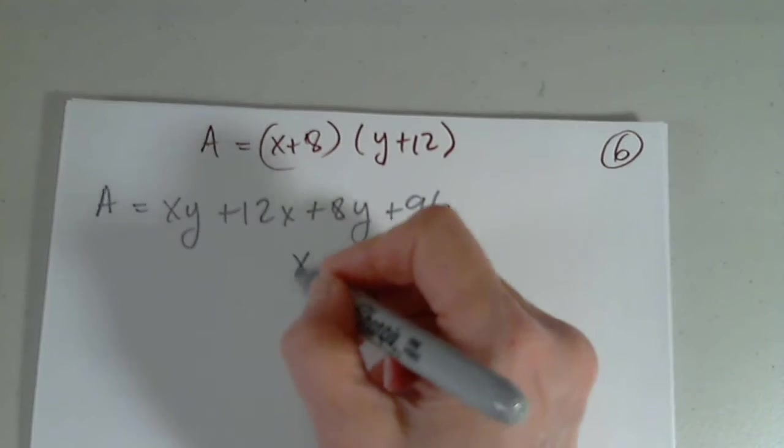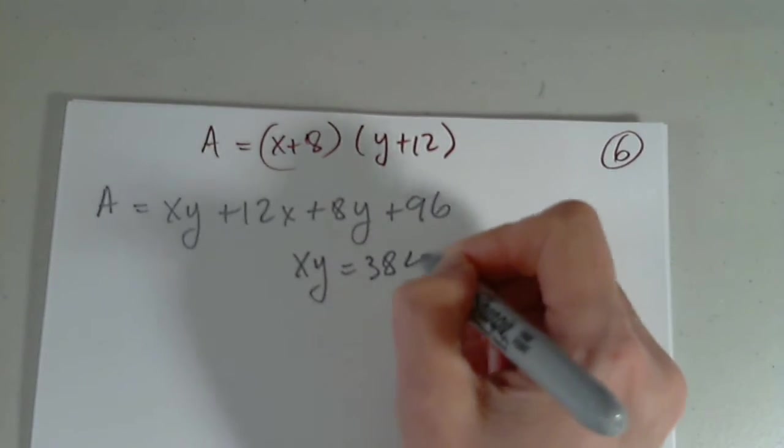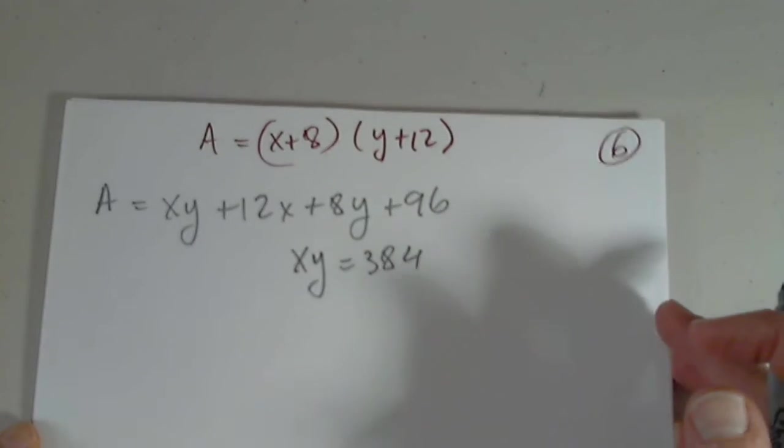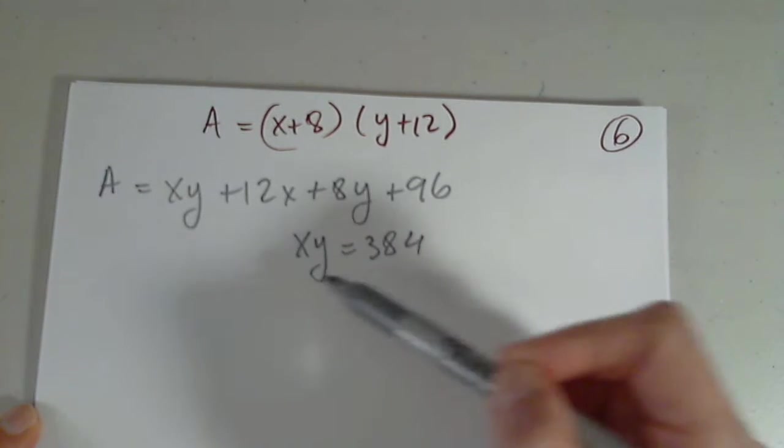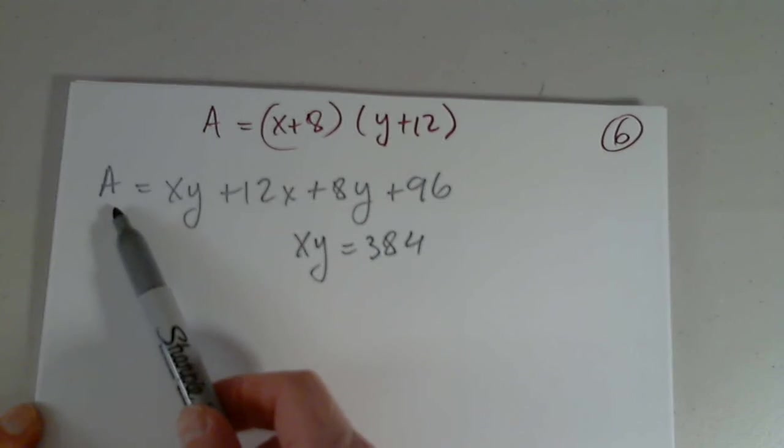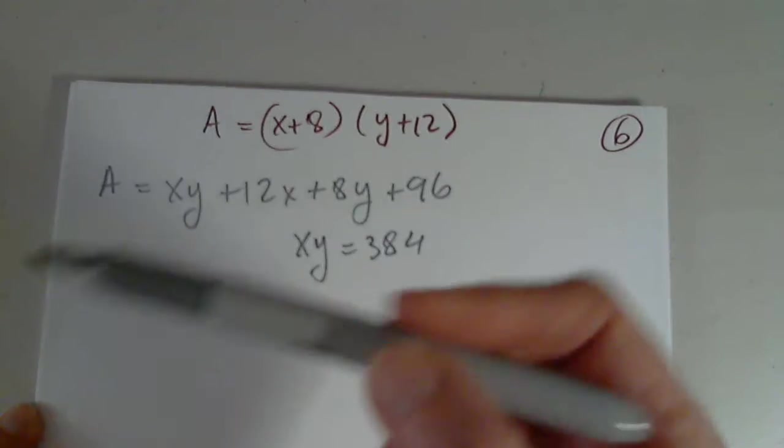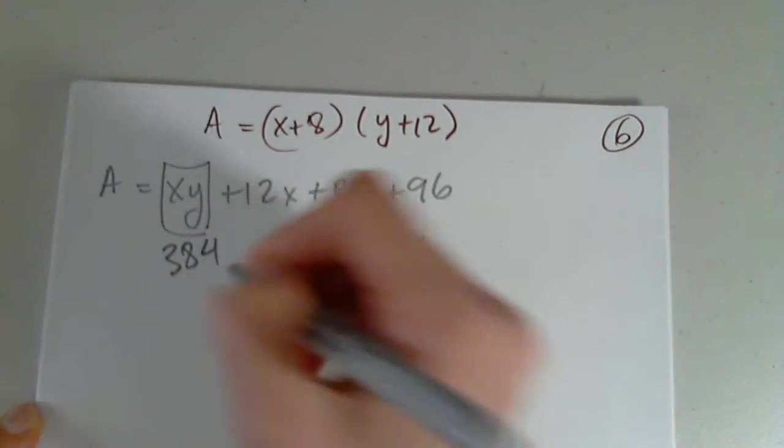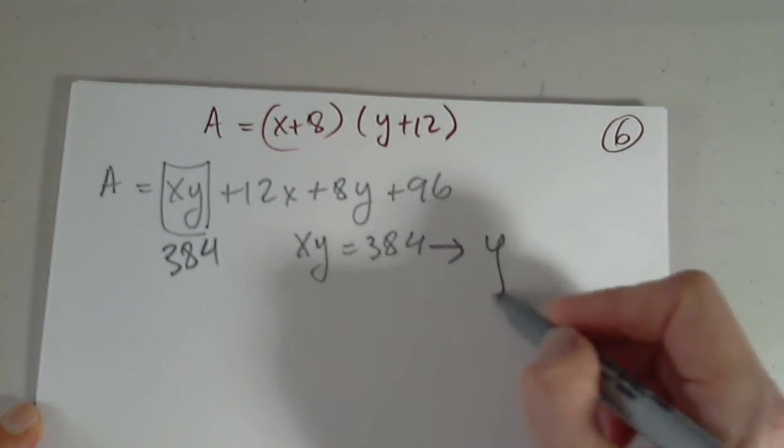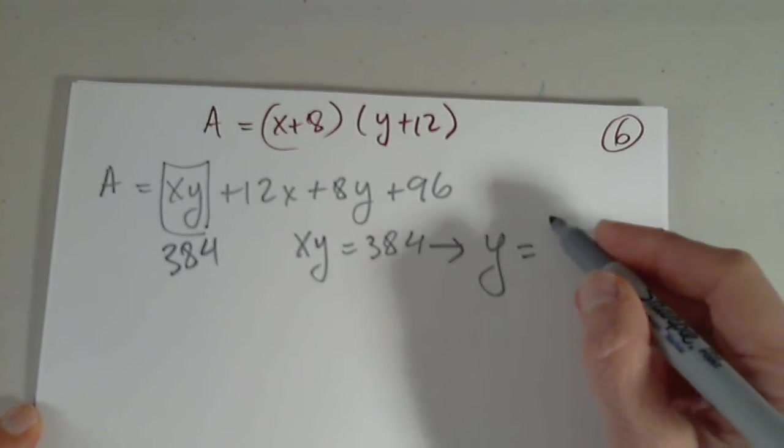So then the area is xy plus 12x plus 8y plus 96. We are told that x times y is 384. I think that that's what it was. Yes, 384 centimeters squared. Of course, I have to get rid of one of the two variables. Because I can't have a function with two variables. I will replace this by 384. But from here, I also have to solve for one or the other.